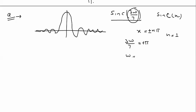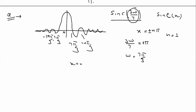Solving, Ω equals 7π/3, and also 14π/3 and so on — negative values are included as well. The peak value of this sinc function is found by putting x equal to zero, which gives us 1. So the peak value of this sinc function is 1.